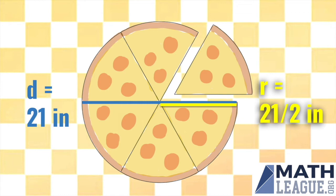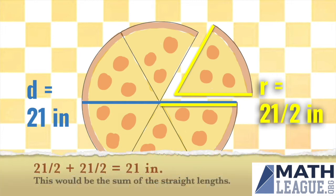We have this length and this length, both of which are radii of the pizza. Adding that up, we have 21 over 2 plus 21 over 2 equals 21 inches for these two lines in yellow along this pizza.